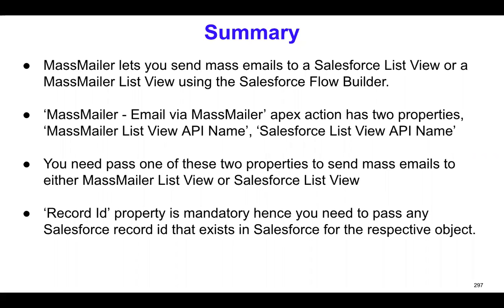Meaning, let's say you create a Salesforce list — you have a contact object — you will have to pick a record ID of a contact. It doesn't matter which record ID, just please make sure that it actually exists always and never delete that. And if you're sending it to leads, then it is one of the record IDs of a lead. That's what you need to pass. So apart from the bare minimum, which is from name and from address, you will have to pass in the list view API name and this record ID, and of course the template ID.